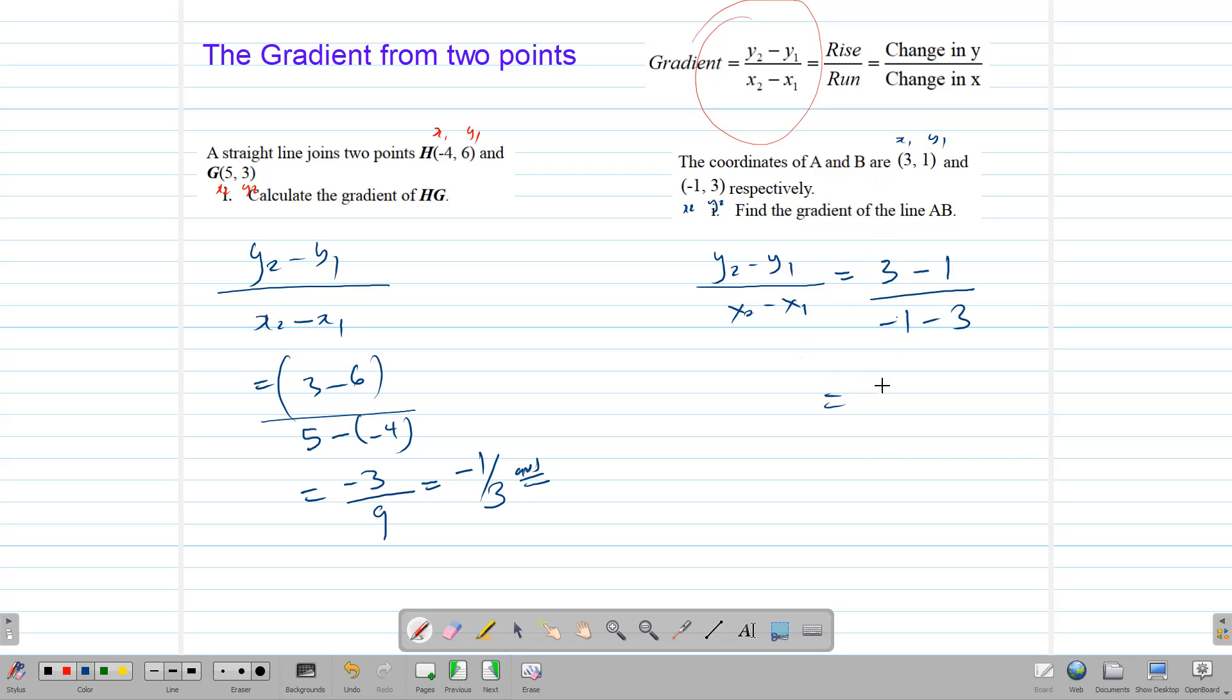This gives us 3 minus 1, which is 2, over negative 1, minus 3, which is negative 4, and that gives us a negative 1 half. And that there is our gradient for this question.